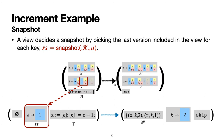Each view corresponds to a local snapshot, which is a simple plain key-value store. It is the initial state for a transaction, and the transaction will read from or write to the local snapshot before commit. We make the assumption that the snapshot includes the latest observable versions.